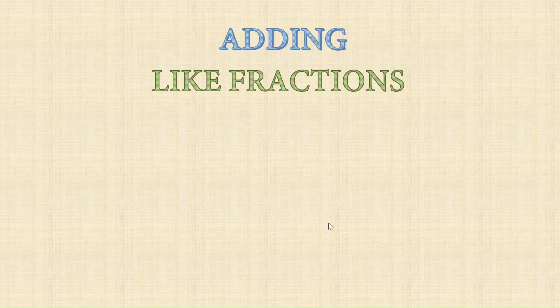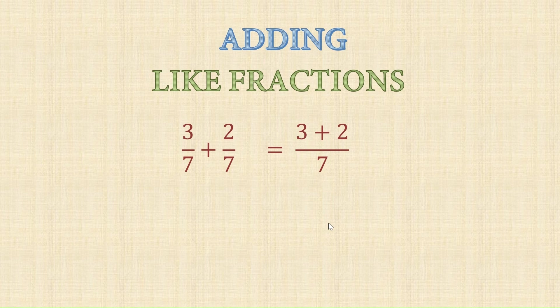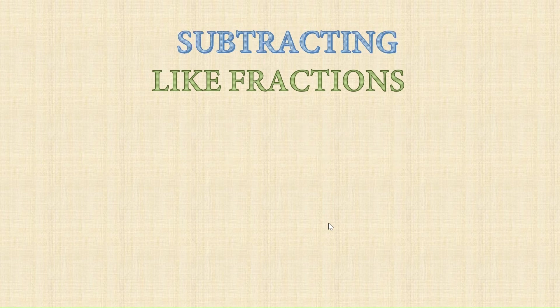Like fractions means when the denominators are the same. Consider 3 upon 7 plus 2 upon 7. Since both have 7 in the denominator, we directly add the numerators: 3 plus 2 upon 7, which equals 5 upon 7.